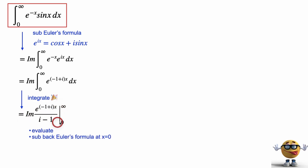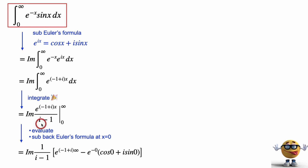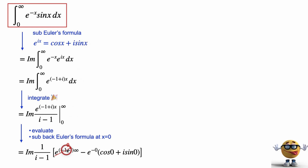At this point we evaluate this by substituting back in Euler's formula and pulling out the negative one plus i part. As x goes to infinity, this term goes to zero — e to the negative infinity goes to zero, and the cosine and sine terms can't get large; the highest they can get is one and the lowest is negative one. So this term goes to zero. At x equals zero, e to the negative zero is one, cosine of zero is one, and sine of zero is zero, so this whole term becomes negative one.